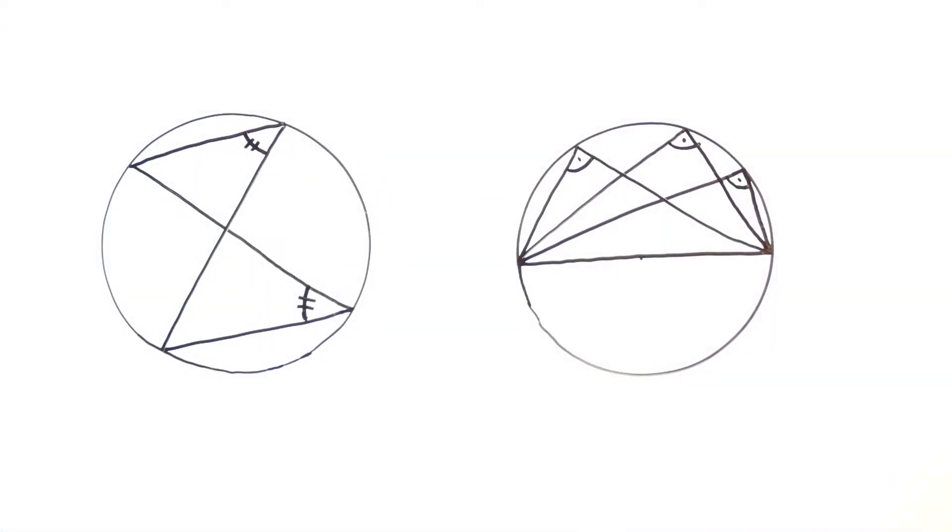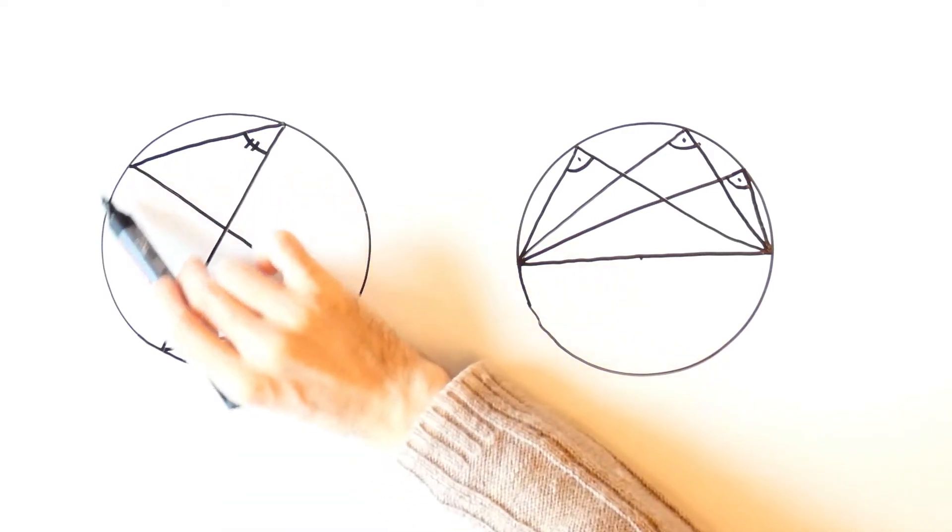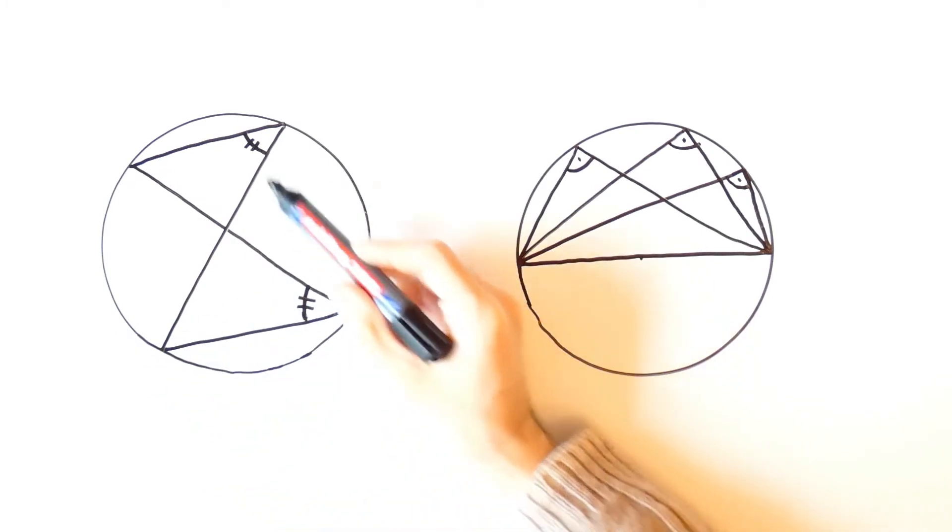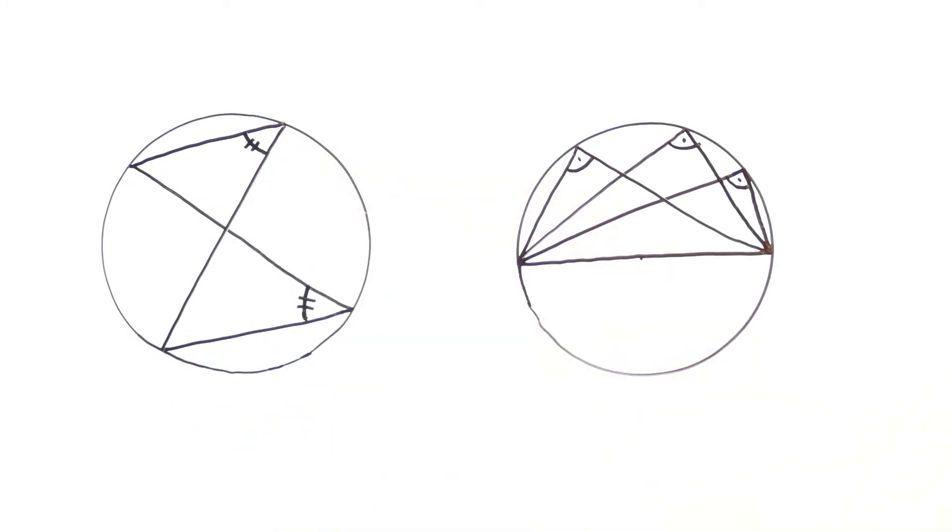For what follows we'll need two things which we won't prove in this video. First, if two inscribed angles intersect the same arc, then they are equal. And second, any inscribed angle that is opposite to a diameter of a circle is equal to 90 degrees.